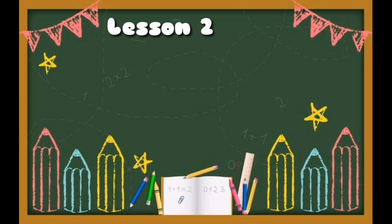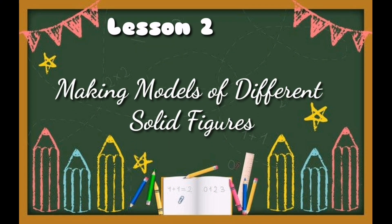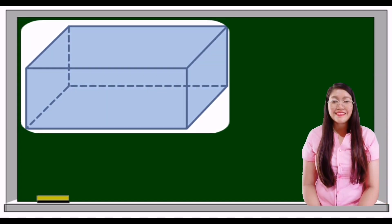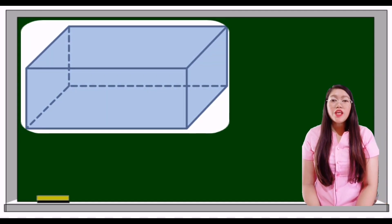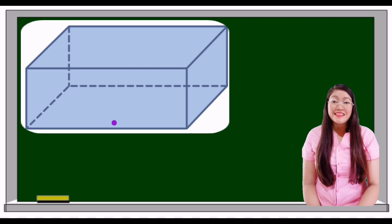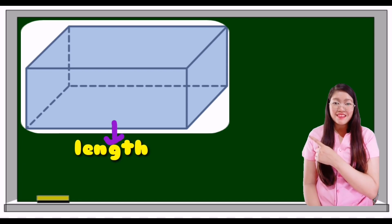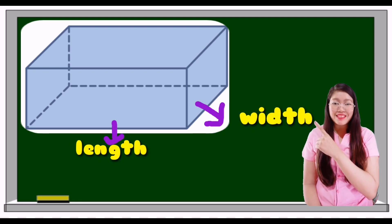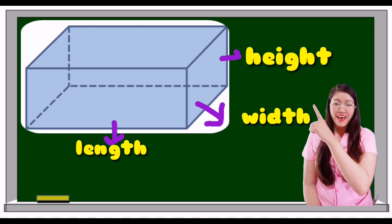Lesson 2 for Week 5. Our topic is about making models of different solid figures. Solid figures have three dimensions: the length, the width, and the height.